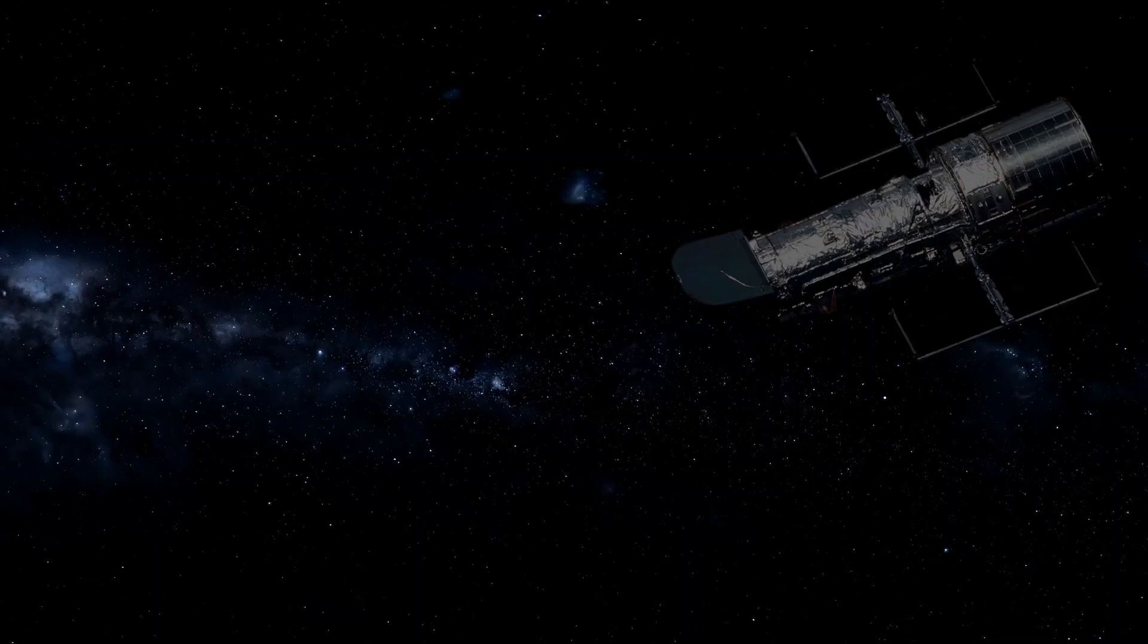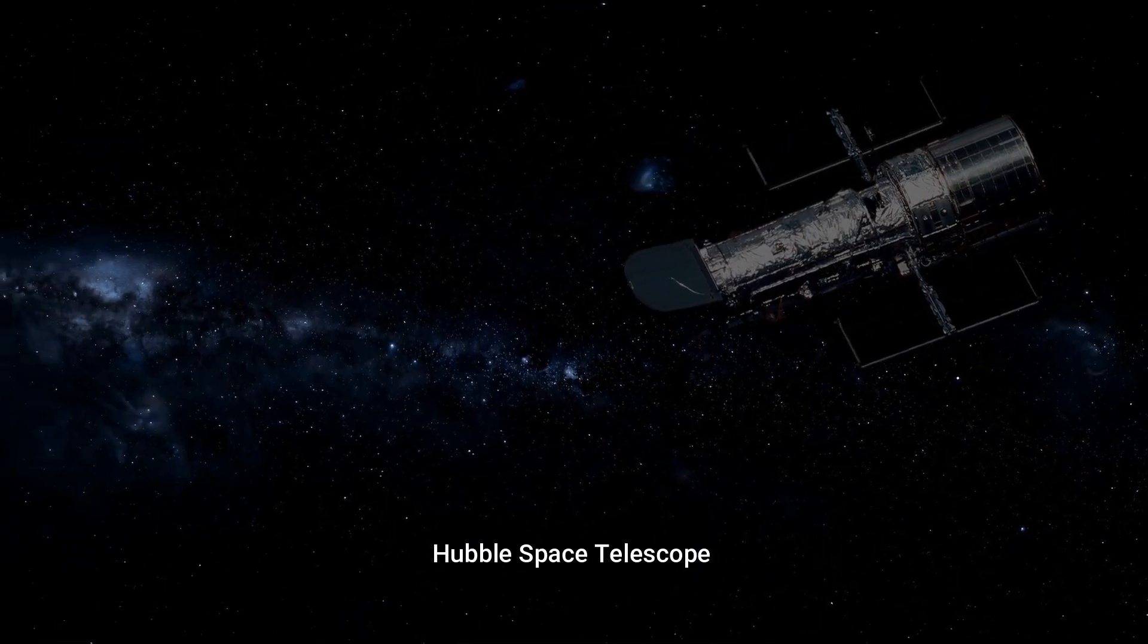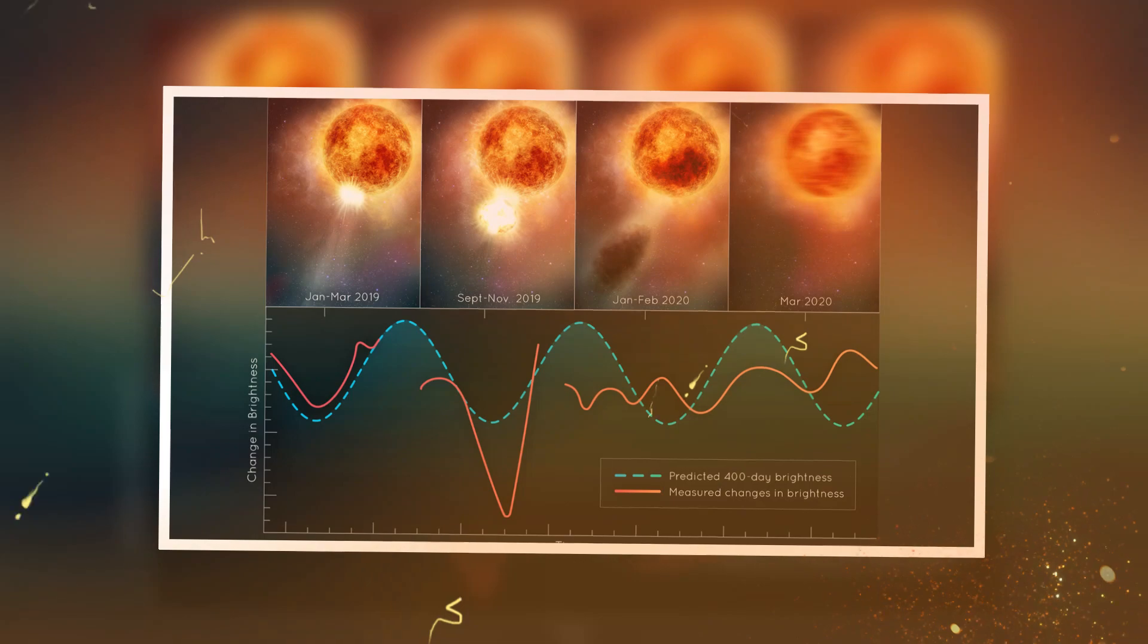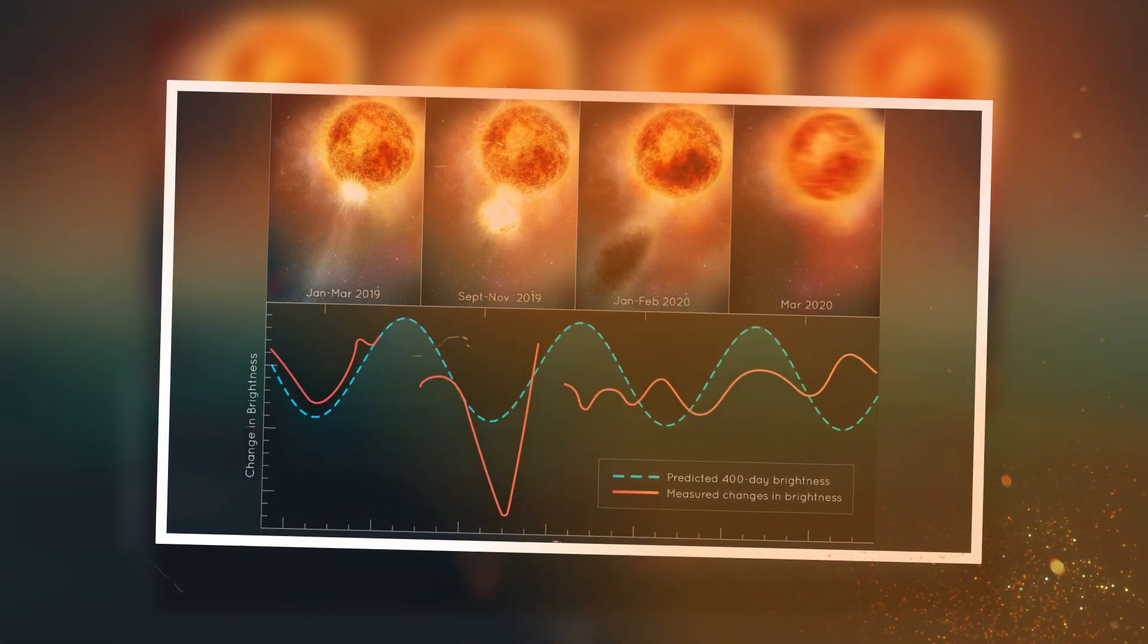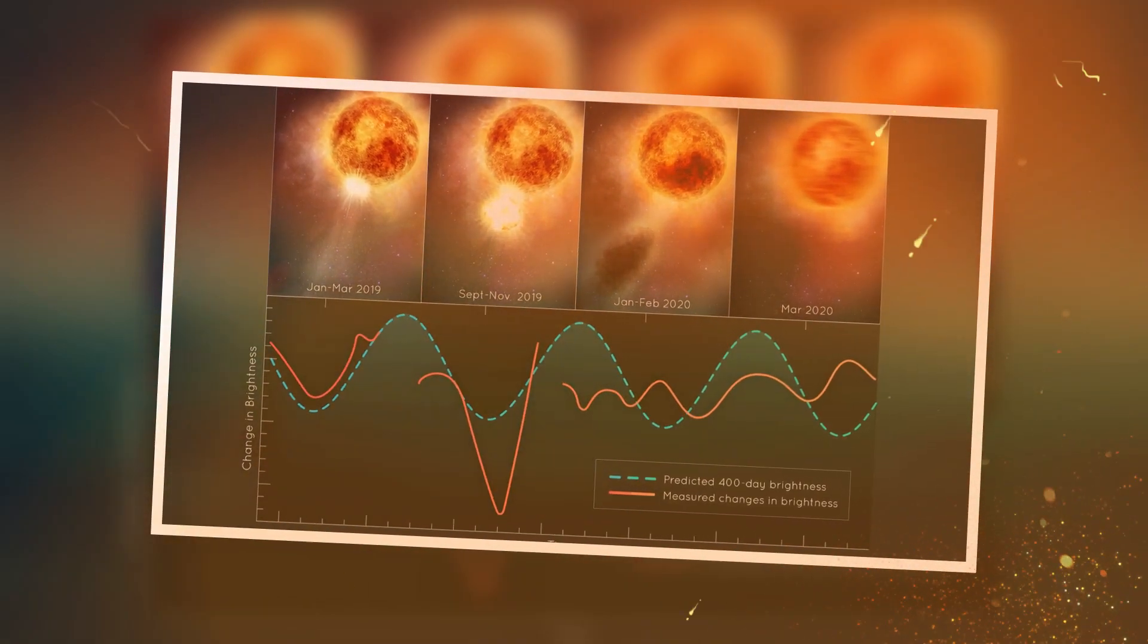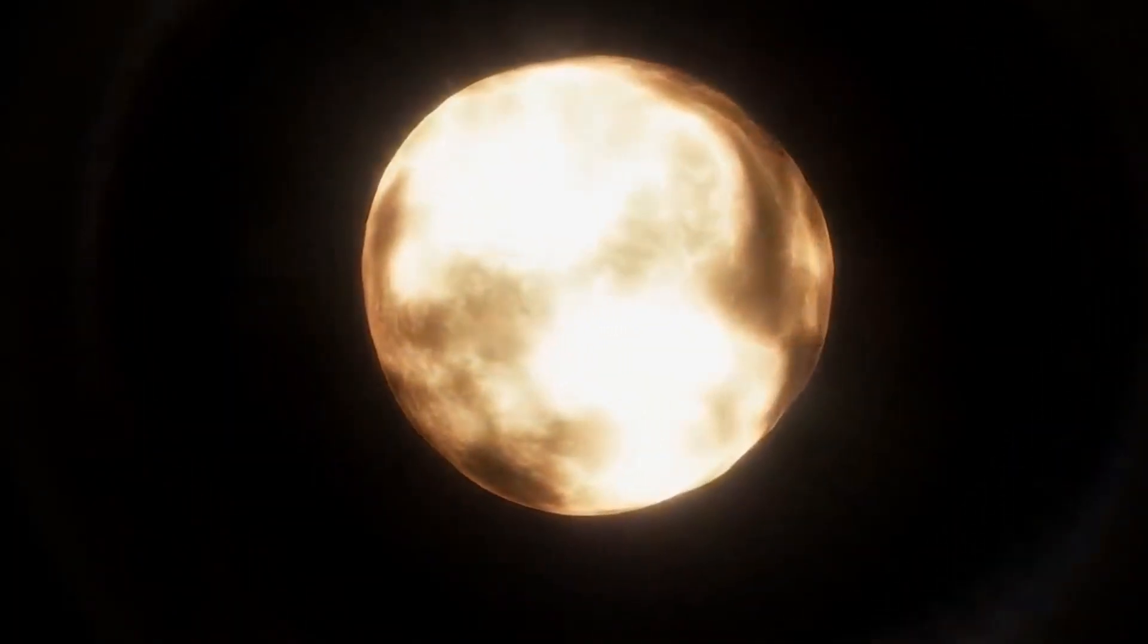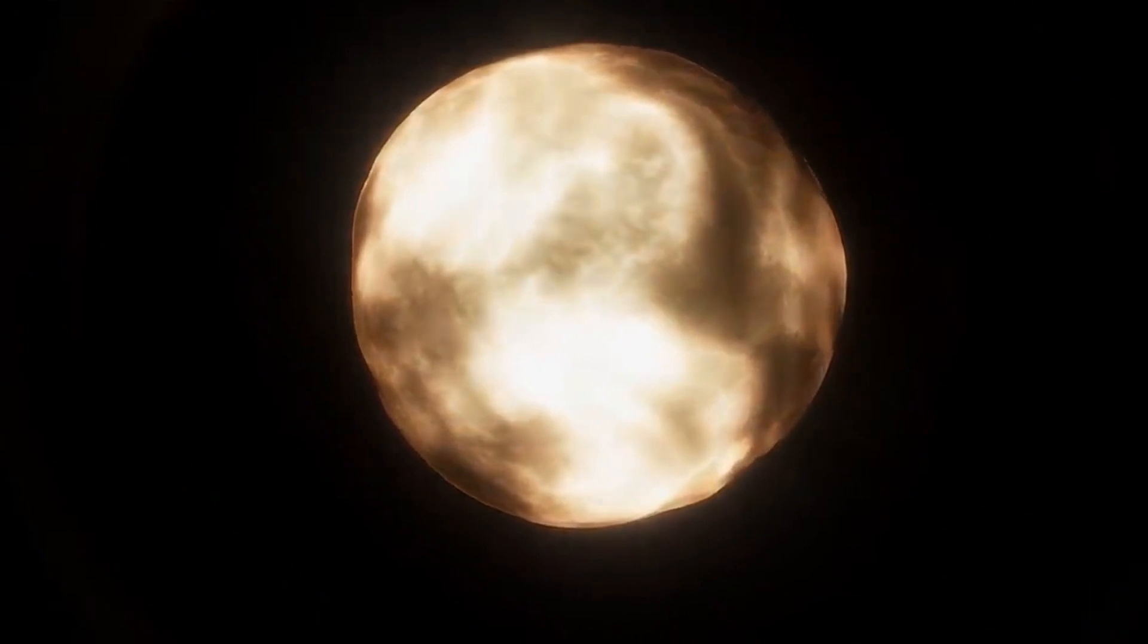So, what made it dim? After looking at data from NASA's Hubble Space Telescope and many other telescopes, astronomers came to the conclusion that the bright red supergiant star Betelgeuse nearly blew its top in 2019. A big surface mass ejection, or SME, happened when Betelgeuse lost a lot of its visible surface.